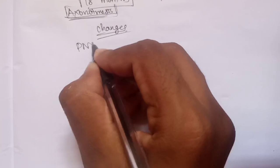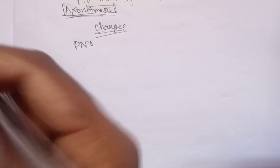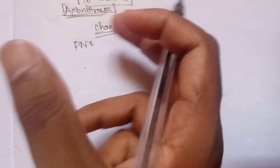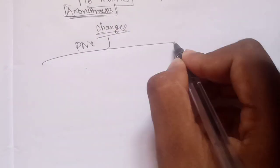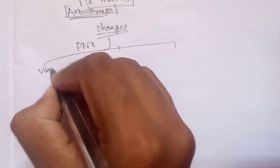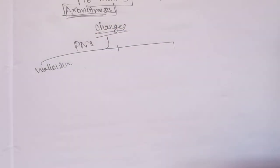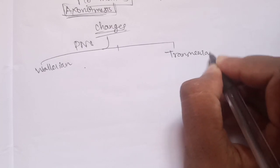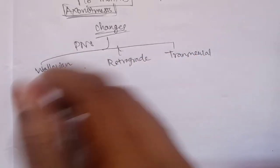We need to take care of the PNS. This is the nerve cell — the nerve cell body. We need to take care of the neurons. The nerve cell body has 2 to 3 types of neurons — 1 type, 2 types, 3 types of neuron arrangements.